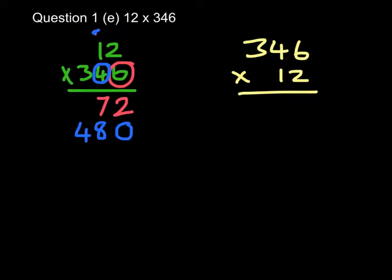And now I will have to multiply by my hundreds. So I'm going to multiply by the 3. Now that's in the hundreds column, so it will need two zeros at the start. 3 times 2 is 6, 3 times 1 is 3.